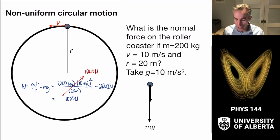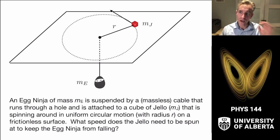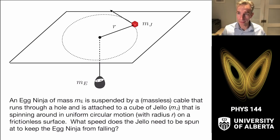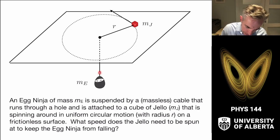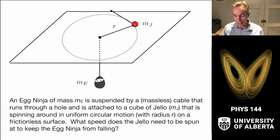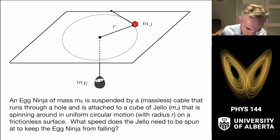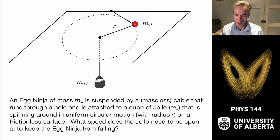I've reached the end of the main points. I have three central examples to go through, but the core content is done. The first example I want to cover is the egg ninja. Imagine the egg ninja is suspended by a massless cable that goes up through a hole in a table and is attached to a block of jello sliding around on a frictionless table. The question is: how fast does the jello have to be moving so that the egg ninja is not falling?